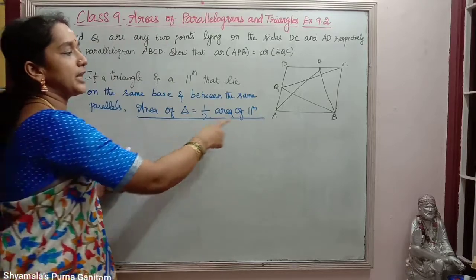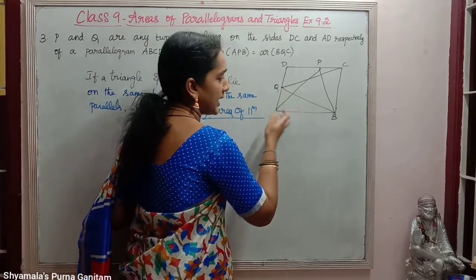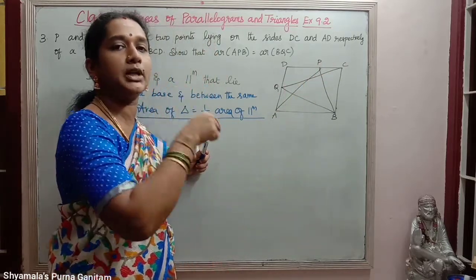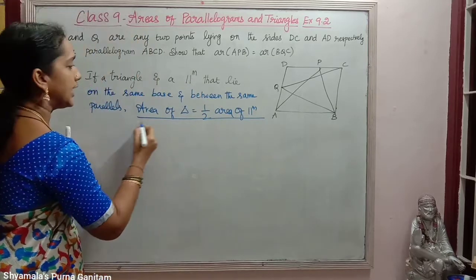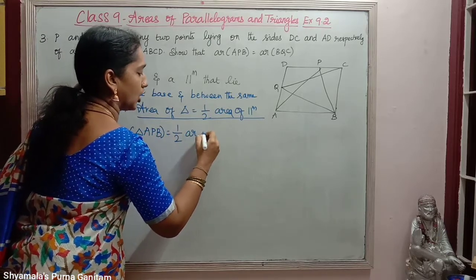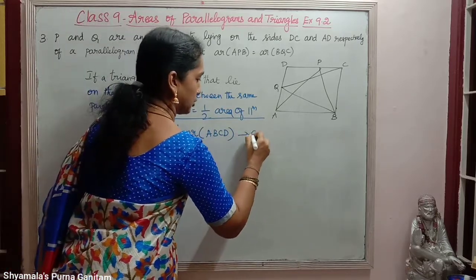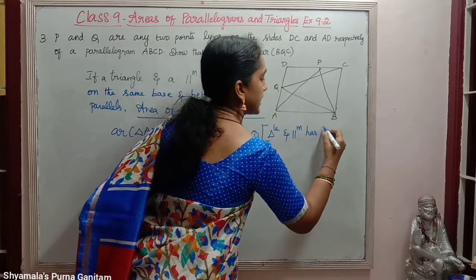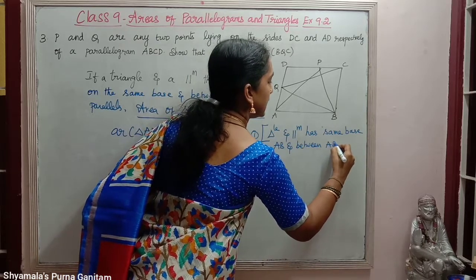Area of triangle equals half the area of the parallelogram. For triangle APB, AB is the common base for the parallelogram ABCD and the triangle. AB and CD are parallel to each other, and the third vertex P of the triangle lies on the other parallel side CD. So area of triangle APB is equal to half the area of parallelogram ABCD. This is the first result.